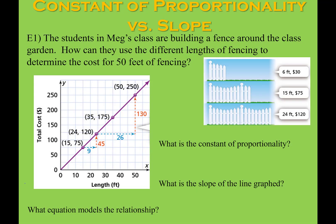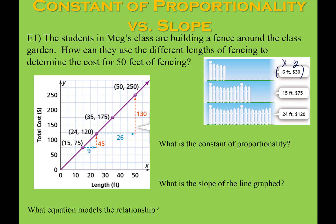Here we have a situation where the students in Meg's class are building a fence around the class garden, and they use different lengths of fencing to determine the cost of 50 feet of fencing. We have three options: 6 feet is $30, 15 feet is $75, and 24 feet is $120. What is the constant of proportionality? This implies it is a direct variation. When I divide each of these ordered pairs, I should get the same value.